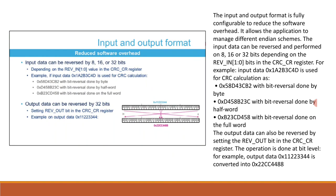With bit reversal done on the full word, the result becomes 0xB23CD458. The output data can also be reversed by setting the REV_OUT bit in the CRC_CR register; the operation is done at the bit level. For example, output data 0x11223344 is converted into 0x2222CC448888.